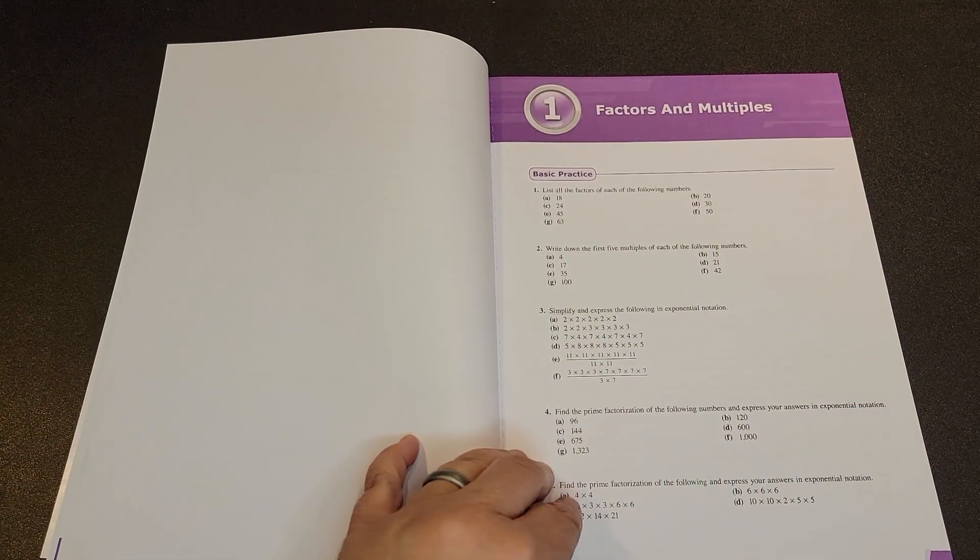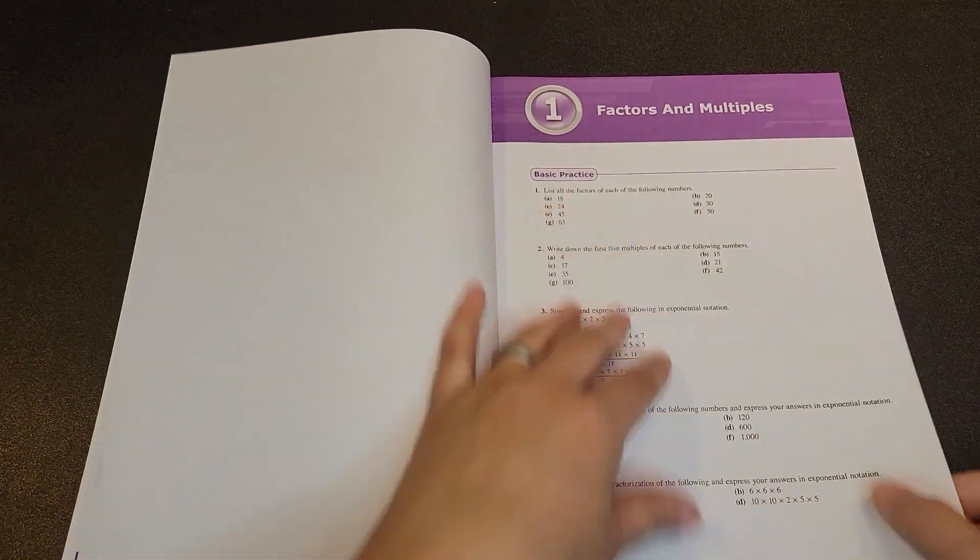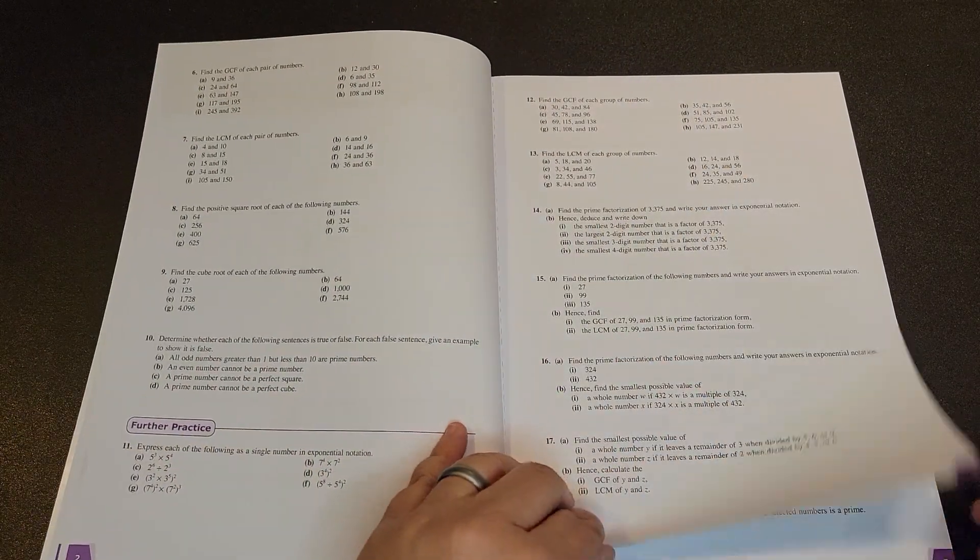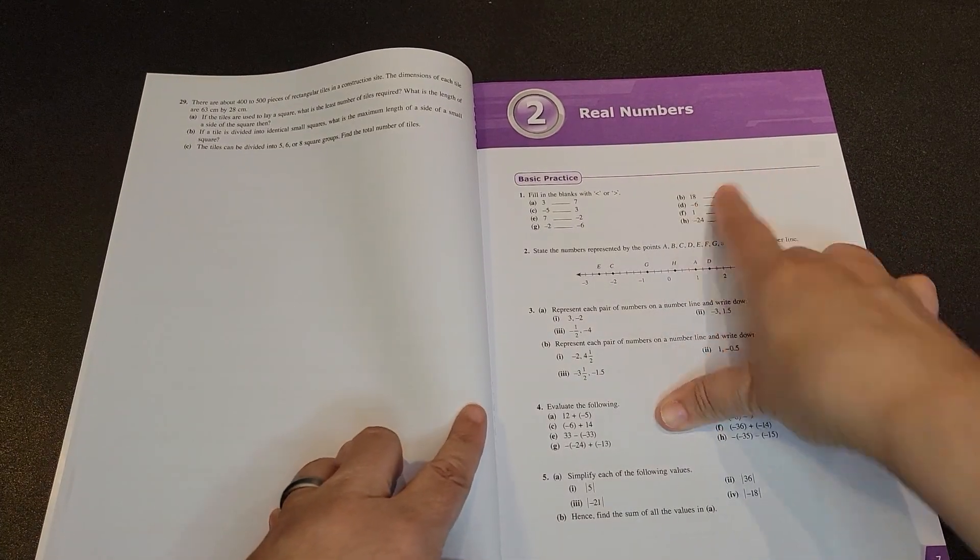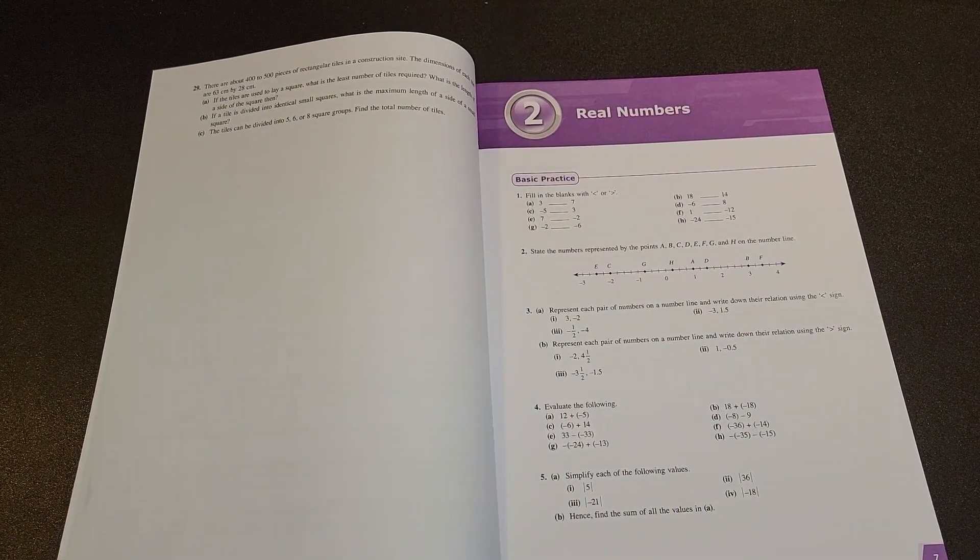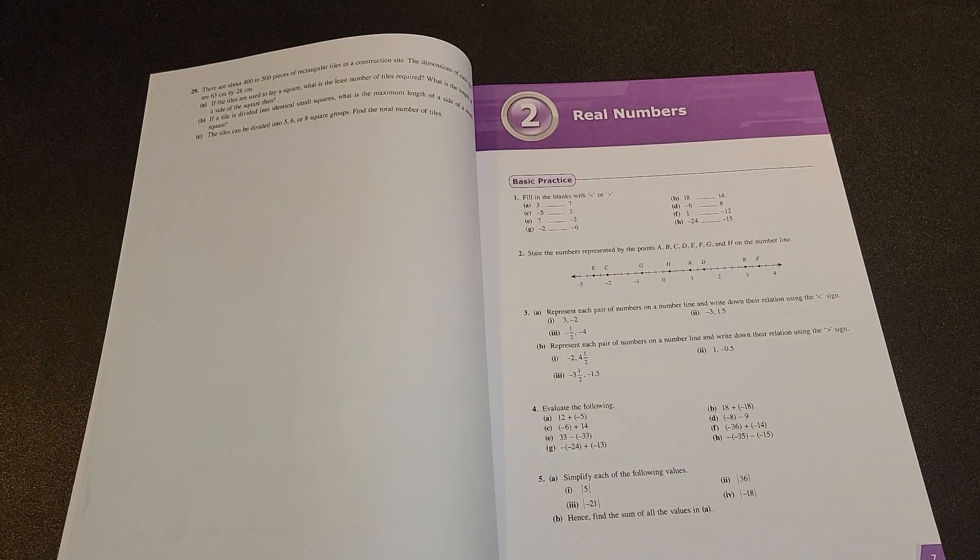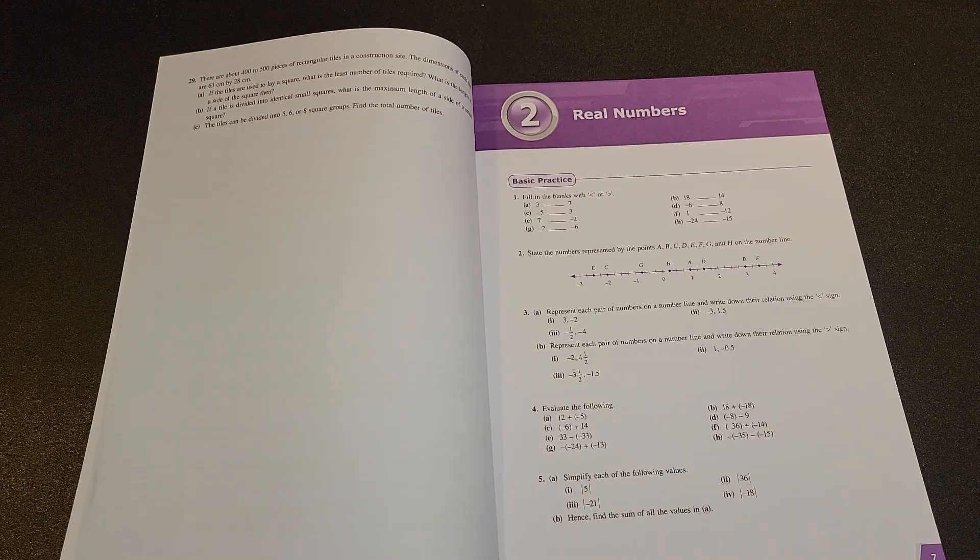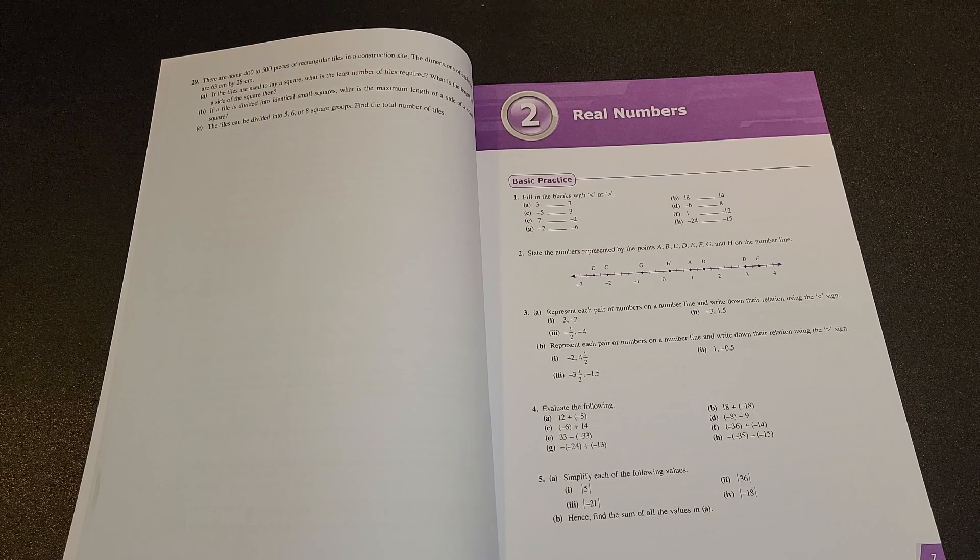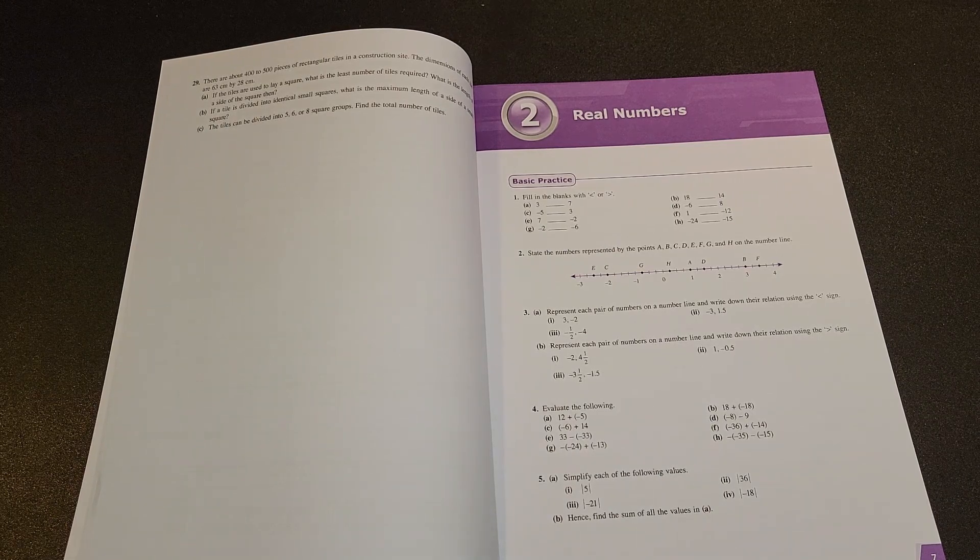So if we look at our workbook, chapter one, factors and multiples, you have these problems for it, and then you go into chapter two, real numbers. So it is not broken down with which problems you want to do for each of your sub-sections. But again, you can figure out which problems if you want to do that. I just wanted to point out that it was not broken down.